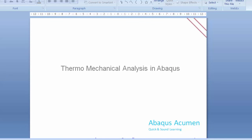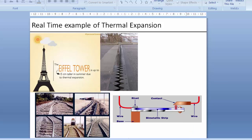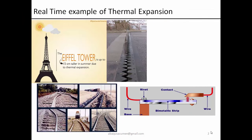The topic is thermo-mechanical analysis in Abaqus Standard. Looking at some real-time examples of thermal expansion: the Eiffel Tower gets taller by 15 centimeters in summer due to thermal expansion. Any metal when heated expands, and when temperature goes down it contracts. You also see road bridges where expansion joints are created because of heat expansion.